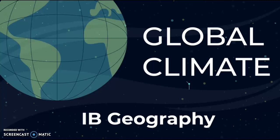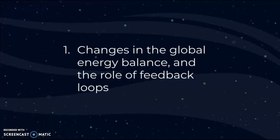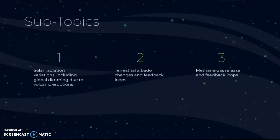This is the second video on global climate from the IB Geography syllabus. This point is about changes in the global energy balance and the role of feedback loops. The subtopics we'll discuss are solar radiation variations, including global dimming due to volcanic eruptions, terrestrial albedo changes, feedback loops, and methane gas release and feedback loops.